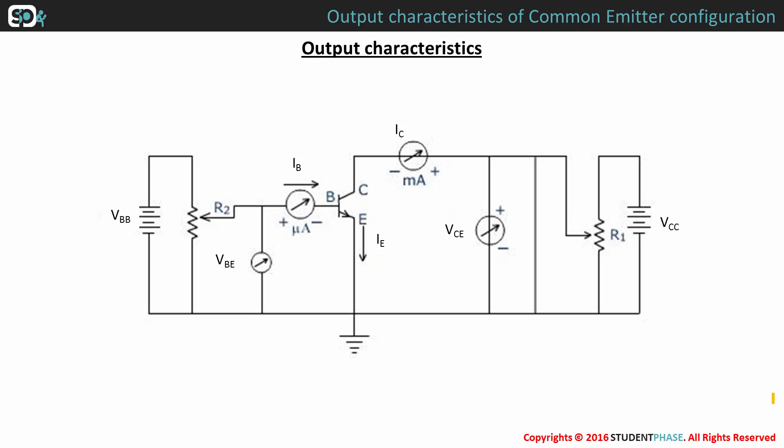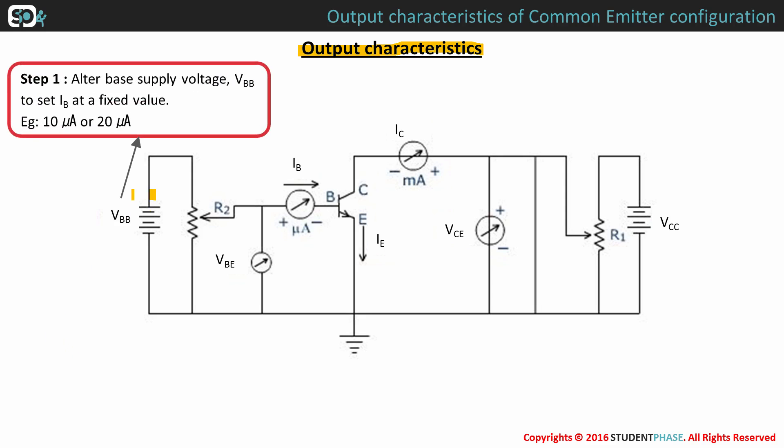Now let's move on to the output characteristics of CE configuration. And to obtain this, there are certain procedures. Alter base supply voltage VBB to set base current IB at a fixed value, say 10 microamps or 20 microamps.